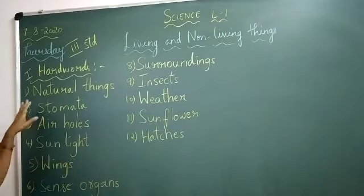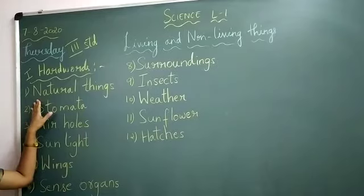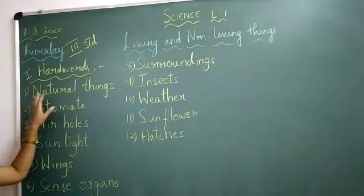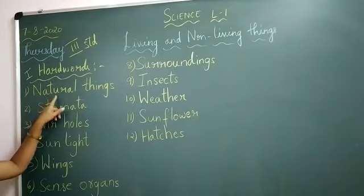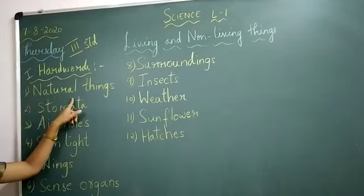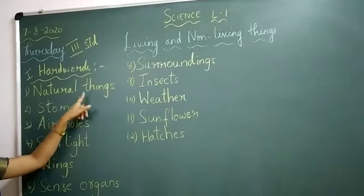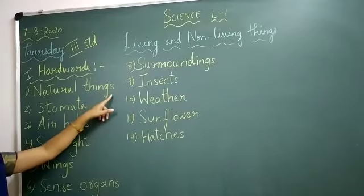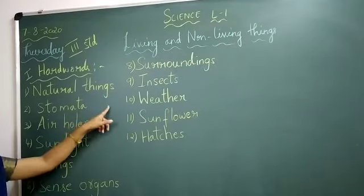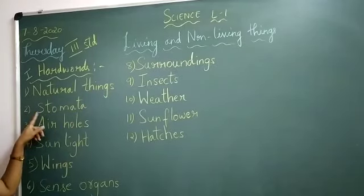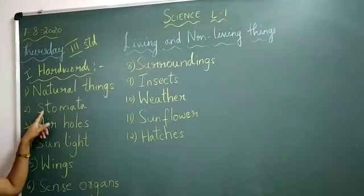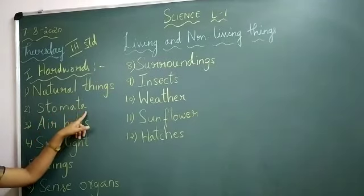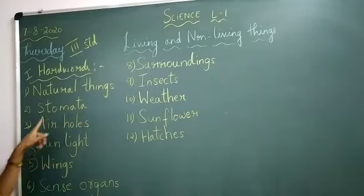Once again, I am going to repeat the words I have written on the board. First one is natural things. N-A-T-U-R-A-L, T-H-I-N-G-S, natural things. Second one: stomata. S-T-O-M-A-T-A, stomata. Third one: air holes.